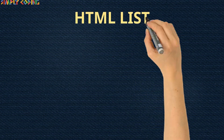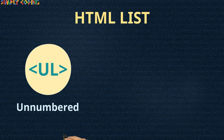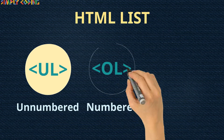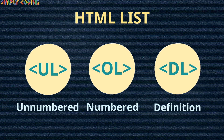In this video, we will cover HTML lists. There are three types of HTML list: unnumbered, numbered, and definition list.